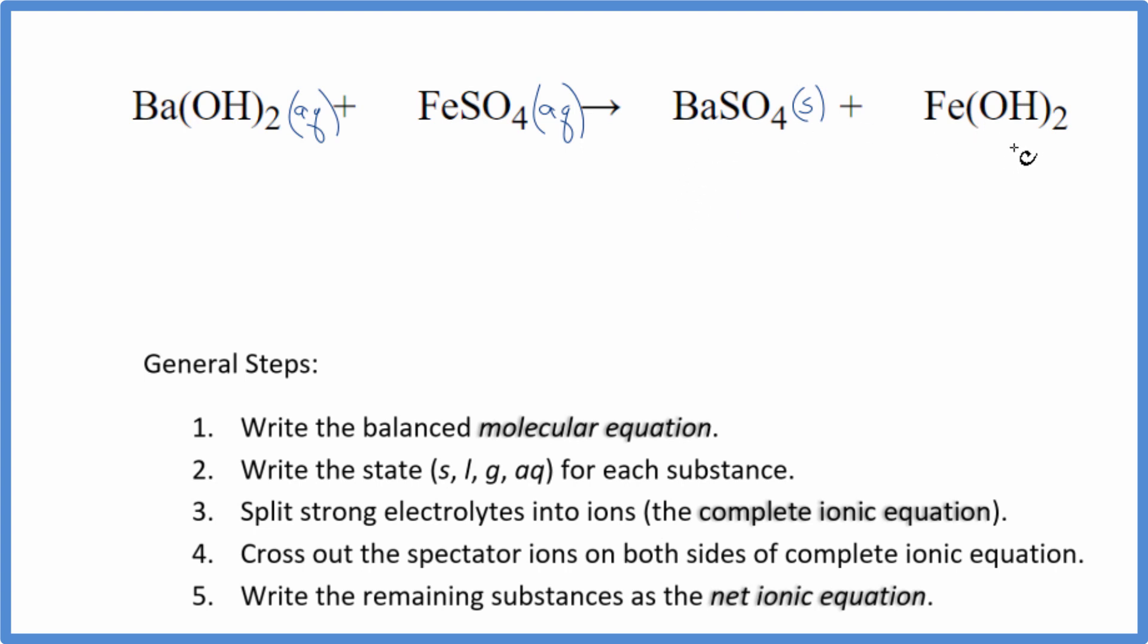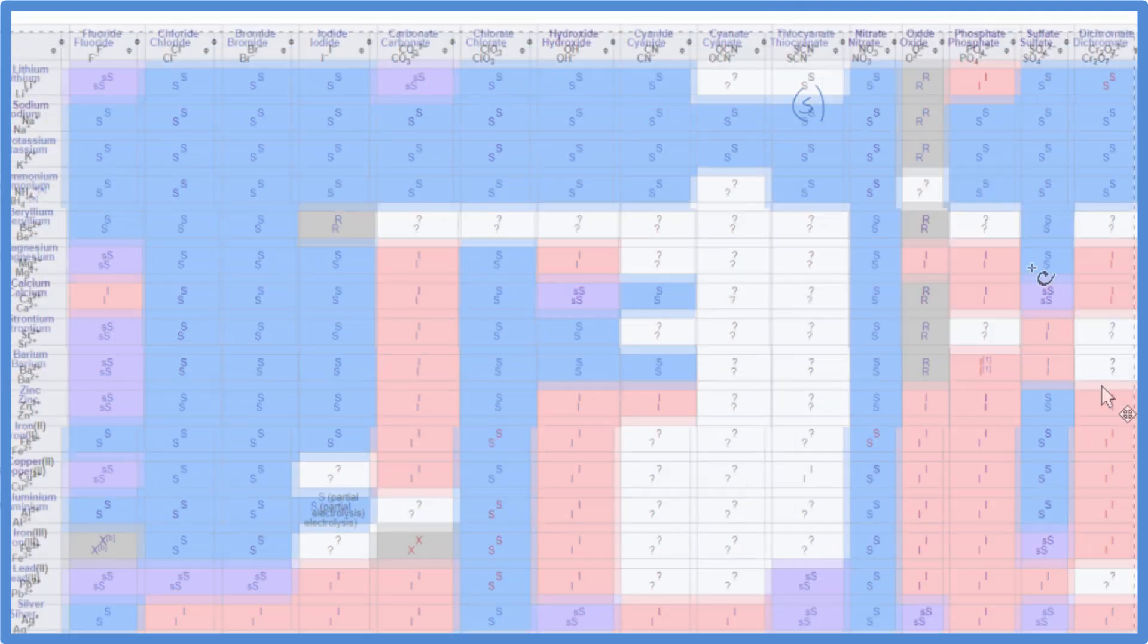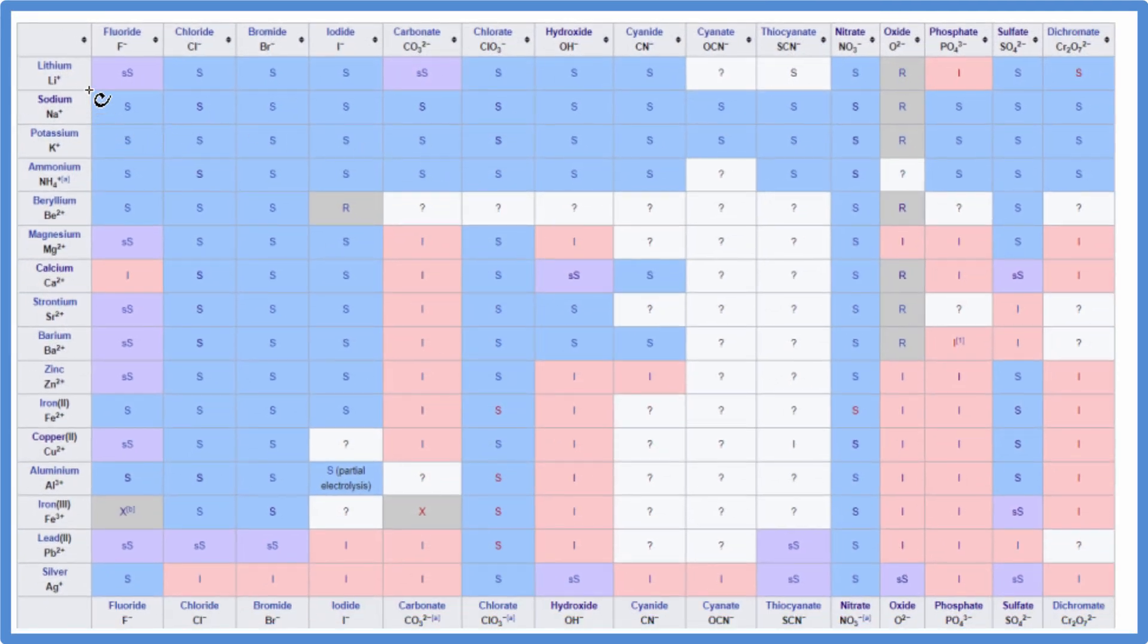Then iron 2 hydroxide, we should look that one up too. Hydroxides are often insoluble. So we come down here, we find iron 2 and then the hydroxide. And iron 2 hydroxide right here, that's insoluble as well. So we actually have two solids formed in this reaction. It's kind of interesting. You don't see that very often.